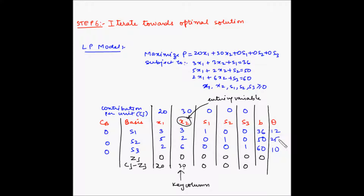These ratios indicate the number of units of a variable that can be produced by trading all of the current level of basic variables. So, if we give up all the values of S1, S2, and S3, then how much of X2 can be produced?